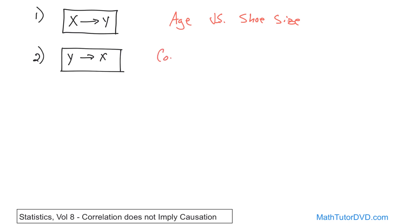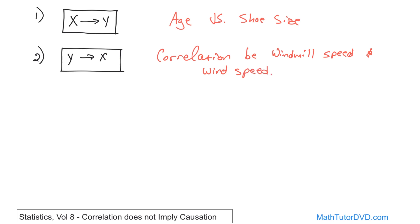An example of that would be the correlation between windmill speed and wind speed. You look at the windmills and see how fast they're turning — you record the windmill speed, how fast it's rotating — and then you also measure how fast the wind is moving. There's a correlation between these two variables. You know that the wind speed is really probably the thing causing the windmill to turn. But what if you accidentally turned it around and got fooled into thinking the windmill speed is actually causing the speed of the wind?